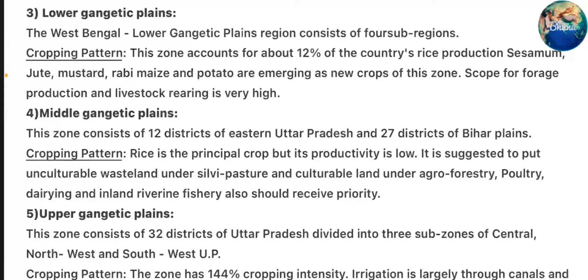Zone 4 – Middle Gangetic Plains: This zone consists of 12 districts of eastern Uttar Pradesh and 21 districts of Bihar Plains. Cropping pattern: rice is the principal crop but its productivity is low. It is suggested to put unculturable wasteland under silvipasture and culturable land under agroforestry. Poultry, dairy, and inland riverine fishery should also receive priority.